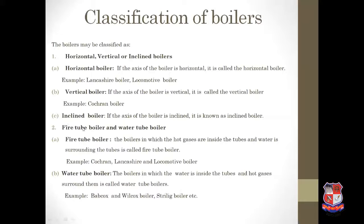The second category is fire tube boiler and water tube boiler. In fire tube boilers, the hot gases are inside the tubes and water surrounds the tubes — examples are Cochrane, Lancashire, and locomotive boiler. In water tube boilers, the water is inside the tubes and hot gases surround them — examples are Babcock-Wilcox boiler and Stirling boiler.